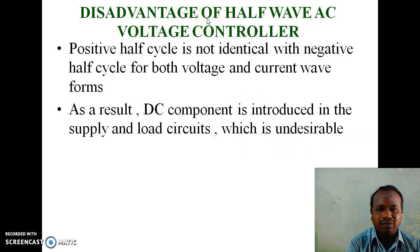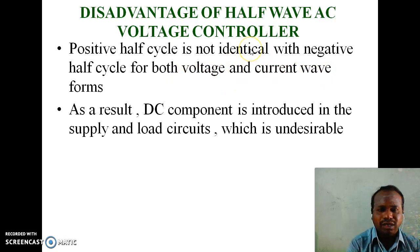Disadvantages of half-wave AC voltage controller: the positive half-cycle is not identical with the negative half-cycle for both voltage and current waveforms, because the positive half-cycle is controlled and the negative half-cycle is uncontrolled. As a result, a DC component is introduced in the supply and load circuits, which is undesirable.